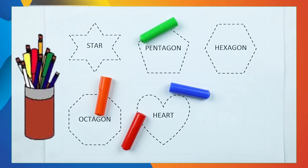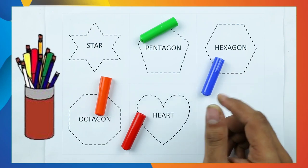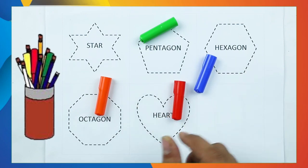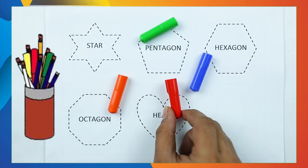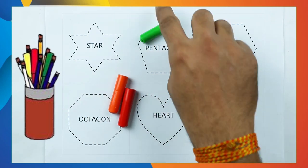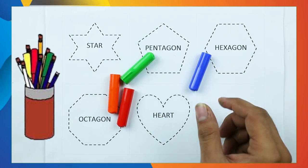Hello friends, today we learn shapes: star, pentagon, hexagon, octagon and heart with colors. Blue color, orange color, red color, green color.